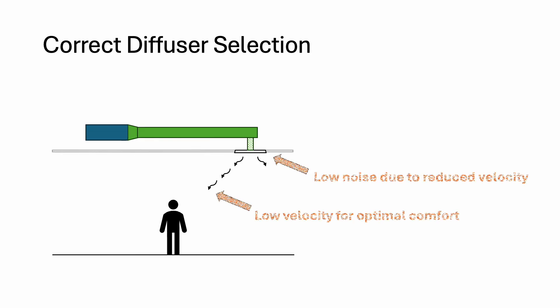By selecting the right diffuser size and throw distance, the air velocity and noise can be controlled. In other words, if you use the wrong diffuser, either the air velocity will be too high or the diffuser will be too noisy.